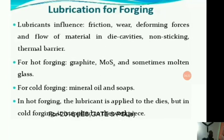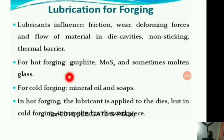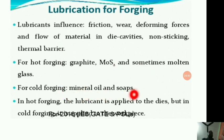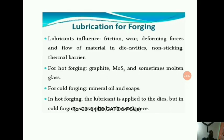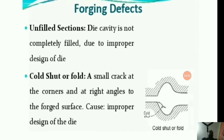Lubrication influences friction, wear, deforming forces, and die cavity filling; it also acts as a non-sticking thermal barrier. For hot forging, graphite, MoS2, and sometimes molten glass are used. For cold forging, mineral oils are used. In hot forging, lubricant is applied to the dies, but in cold forging it is applied on the workpiece.